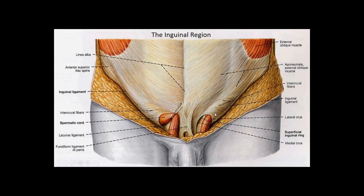There is a gap in the external abdominal oblique for the spermatic cord — that is the superficial or external inguinal ring. There are fibers on either side: the lateral crus and the medial crus, with sometimes intracural fibers spanning between them. The spermatic cord travels through this ring in males. In women, a remnant of the gubernaculum — the round ligament of the uterus — passes through the same space, not taking up as much room and distributing through the connective tissue of the labia majora.